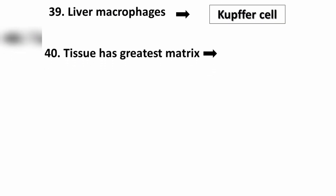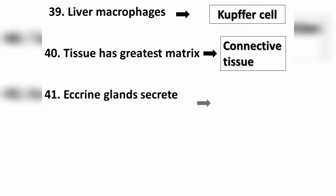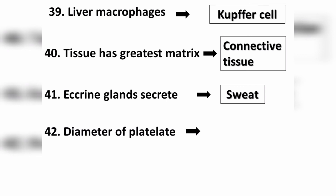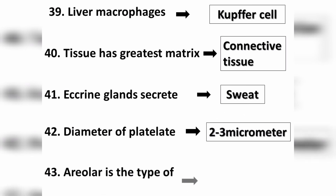Question number thirty-nine: liver macrophages are also called Kupffer cells. Question number forty: the tissue with the greatest matrix is dense connective tissue. Question number forty-one: eccrine glands secrete sweat. Question number forty-two: the diameter of a lateral cell is two to three micrometers. Question number forty-three: areolar tissue is a type of connective tissue.